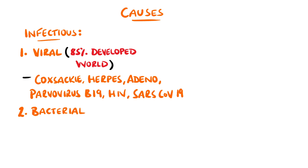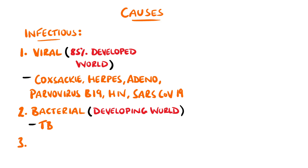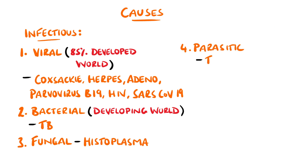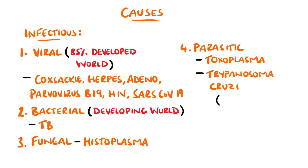Bacterial causes are next, such as pneumococcus or TB, but this is most common in developing countries. Fungal or parasitic infections are extremely rare. Examples are histoplasma and toxoplasma. A famous protozoan causing myocarditis is Trypanosoma cruzi, the causative agent for Chagas disease.